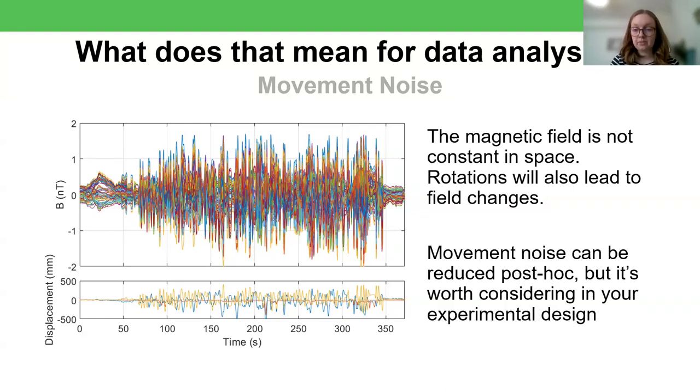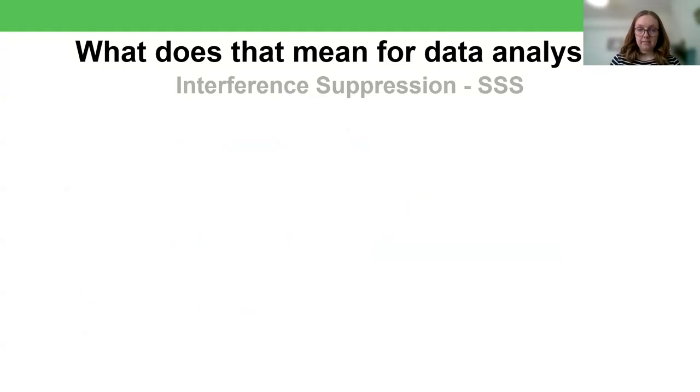Now, movement noise can be reduced post hoc, but it is worth considering in the experimental design. Particularly, you don't generally want to be comparing two conditions where one contains a lot of movement and one contains very little. In a lot of ways, signal space separation or SSS should be the perfect method for getting rid of this kind of movement noise.